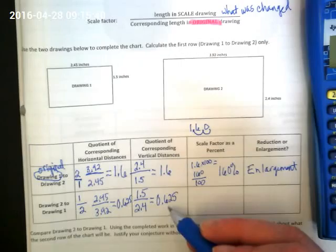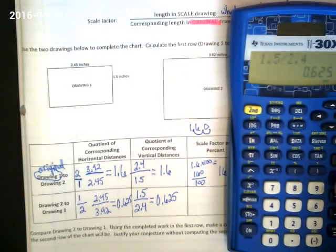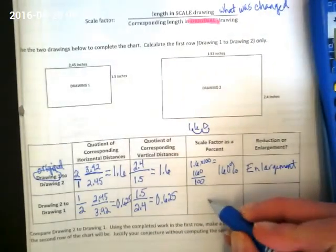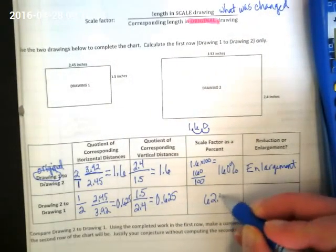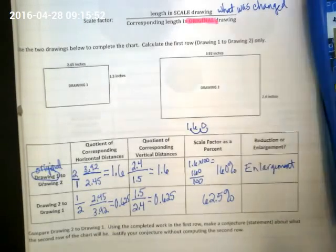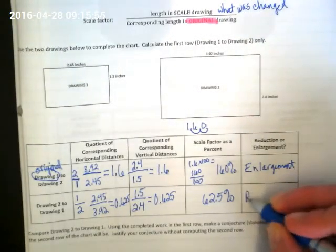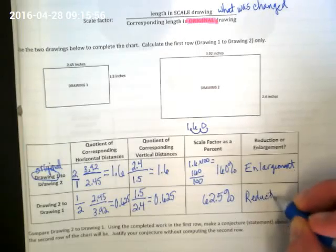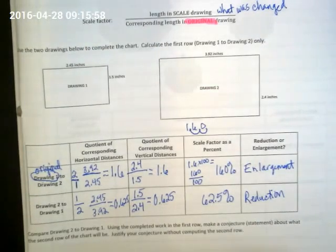If I take 0.625 and multiply it times 100, what happens? So our percent becomes 62.5%. Is that an enlargement or a reduction? Reduction.